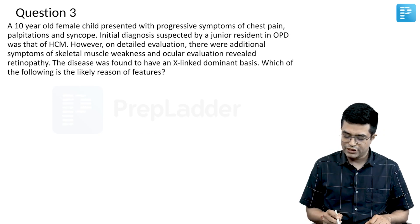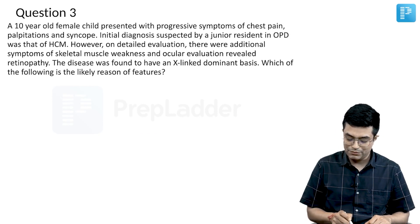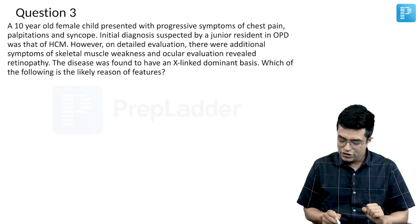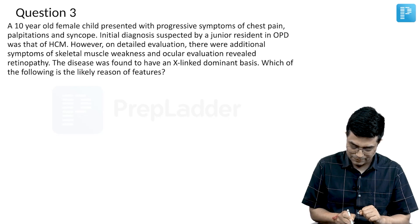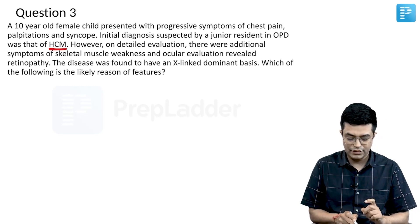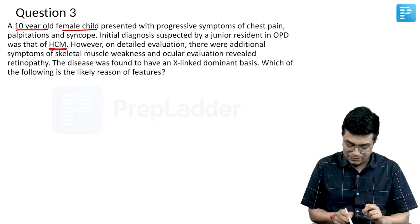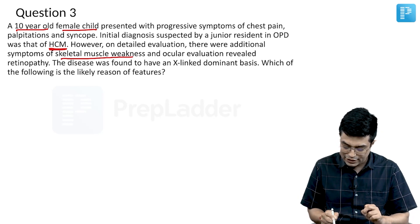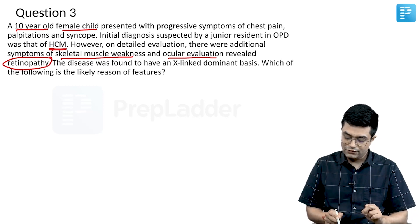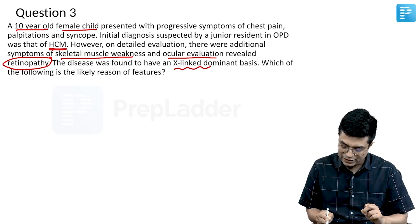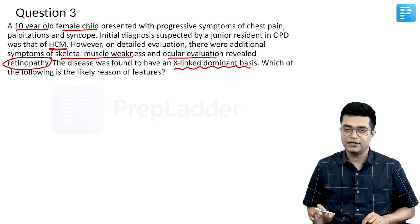A 10-year-old female child presented with progressive symptoms of chest pain, palpitation, and syncope. Initial diagnosis suspected by a junior resident in OPD was hypertrophic cardiomyopathy (HCM). On detailed evaluation, there were additional symptoms of skeletal muscle weakness, and ocular evaluation revealed retinopathy in the patient. The disease was found to have an X-linked dominant basis.